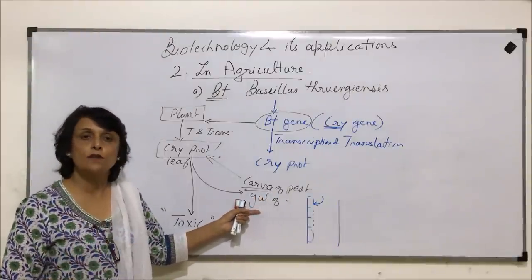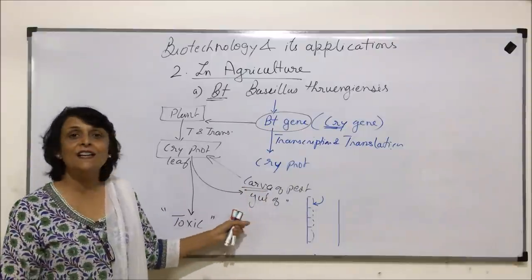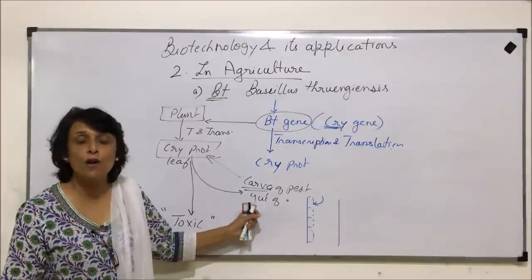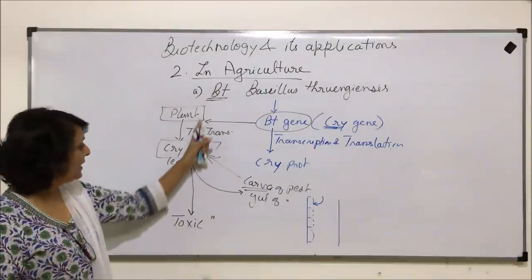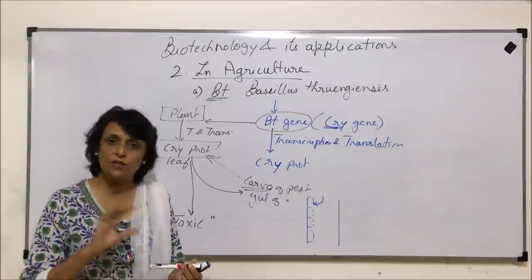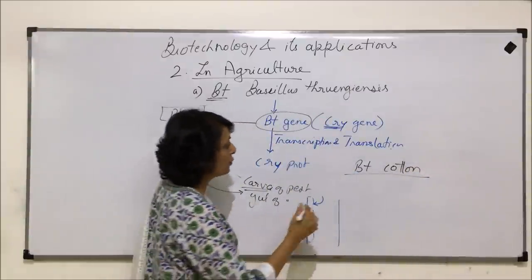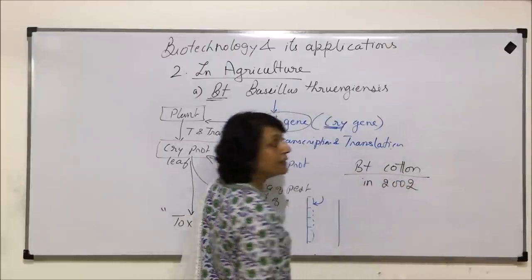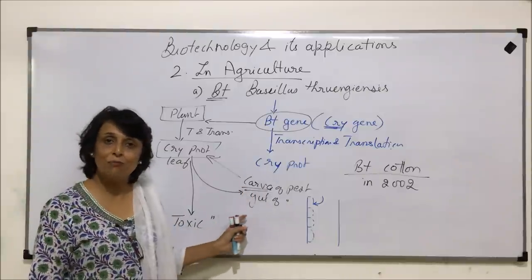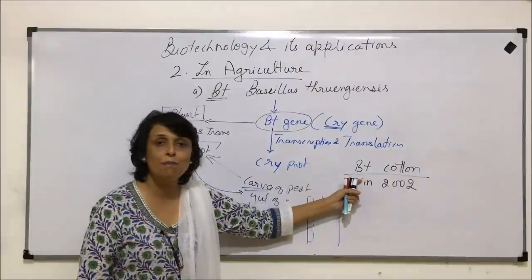In the metamorphosis of these insects, there are four stages: egg, larval stage, pupal stage, and adult stage. If the larva gets killed, we do not get the pupa, and if we don't have the pupa, there is no adult, which is the reproductive stage. That means we have destroyed the pest in the middle of its life cycle. Using this technique, we have developed many plants — Bt cotton, Bt tobacco, Bt brinjal, Bt soybean, and so on. Bt cotton was introduced in India in 2002 and is used as a pest-resistant plant.